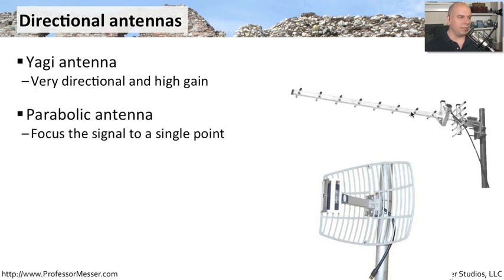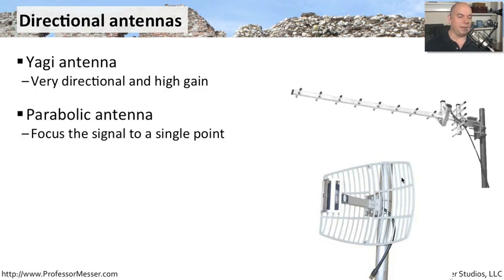There's another type of directional antenna called a parabolic antenna. This parabolic antenna focuses on a single point. It's also receiving signals across a larger area and focusing them into a single feed horn on the front of that antenna. So the signals are being captured very easily by this very large dish and being focused in this single direction right on the end of the antenna.